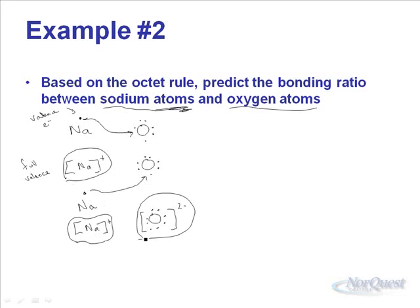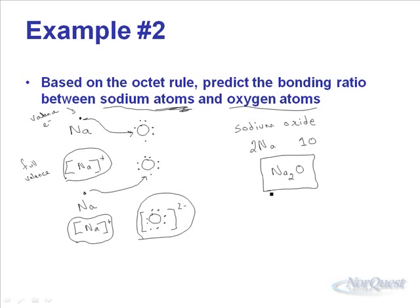Atoms occur in groups of hundreds of millions all colliding together. It turns out that when sodiums and oxygens collide, they form a compound called sodium oxide, and the atoms of sodium oxide are always in a ratio of two sodiums to one oxygen. When we write the chemical formula, we write subscripts after the symbol: Na₂O. Since there's only one O, we don't need to write that number in. You should at least recognize that this compound has two sodiums and one oxygen — that's how we predict the bonding ratio between a metal and a non-metal.